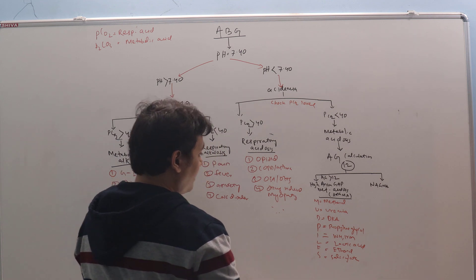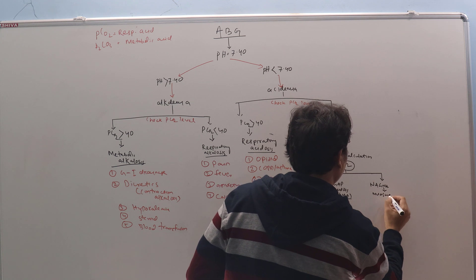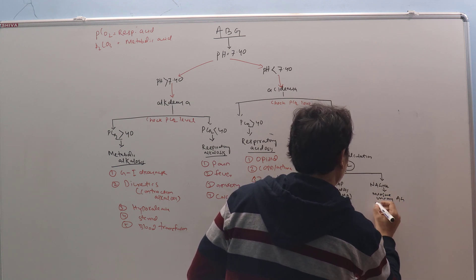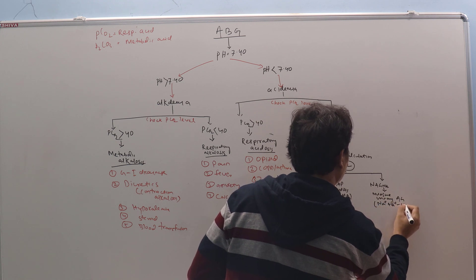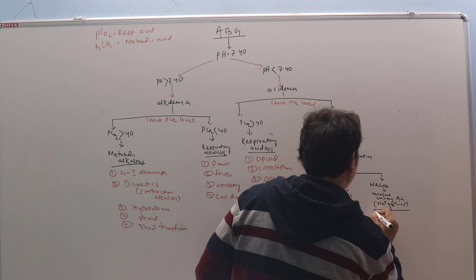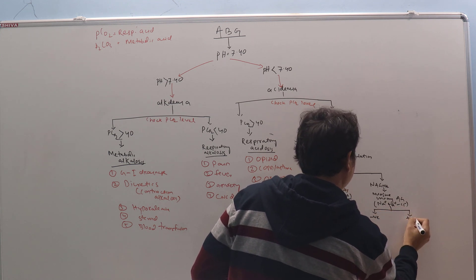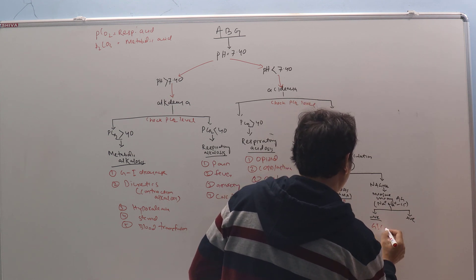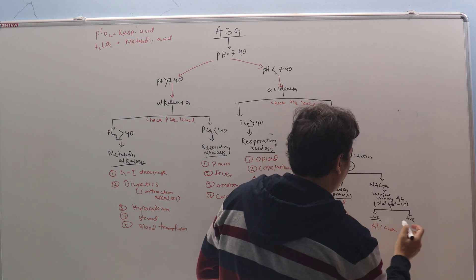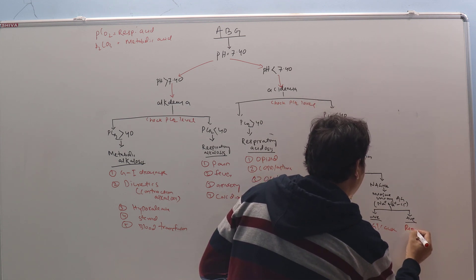When you come to NAGMA, the next step will be measure urinary anion gap. The formula will be sodium plus potassium minus chloride. It can be two types: negative or positive. If it is negative, then it is GI cause or diarrhea. If it is positive, then it will be renal cause.